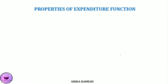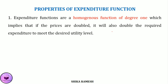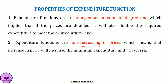Coming to the properties of the expenditure function: the first property is that expenditure functions are a homogeneous function of degree 1, meaning that if the prices of the goods are doubled, the minimum expenses required to meet that utility level will also double. The second property is that expenditure functions are non-decreasing in prices — if the price of goods increases, the minimum expenditure required to meet that utility level will also increase, and vice versa.